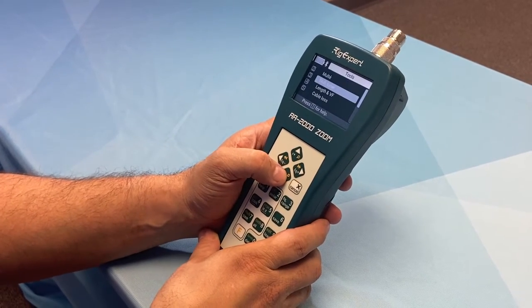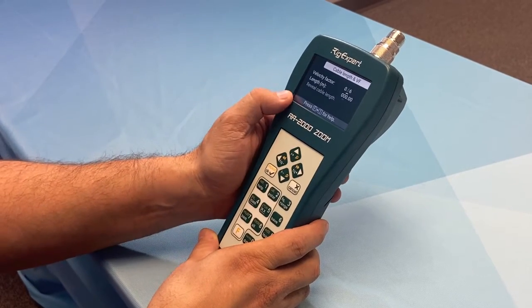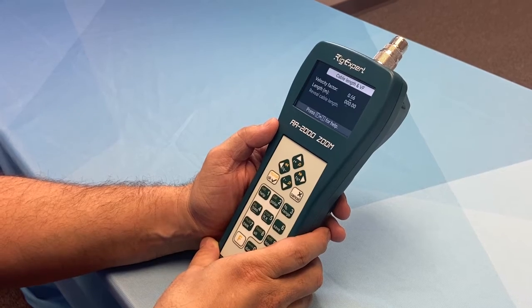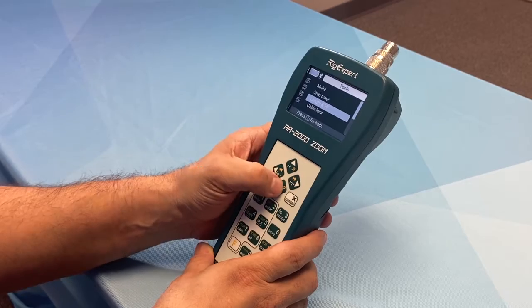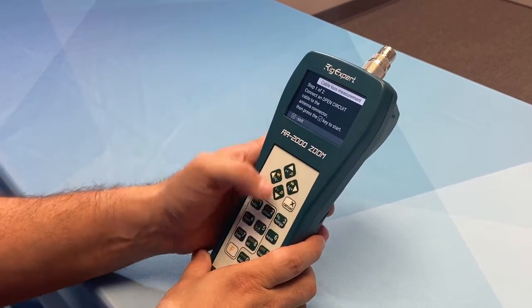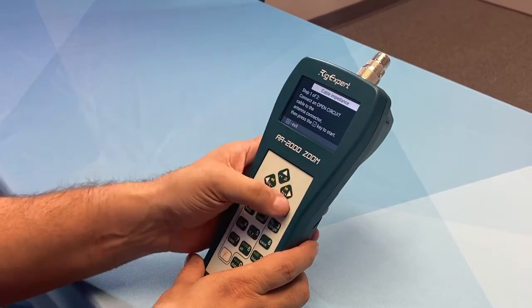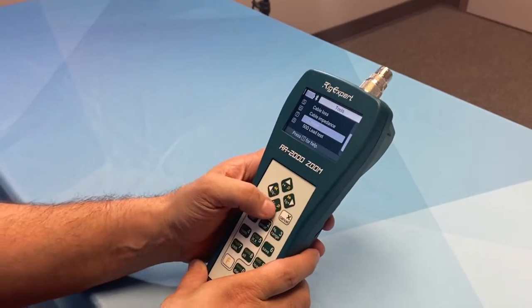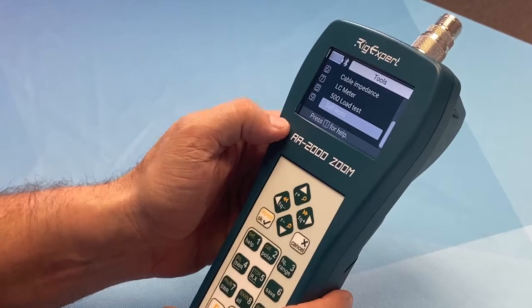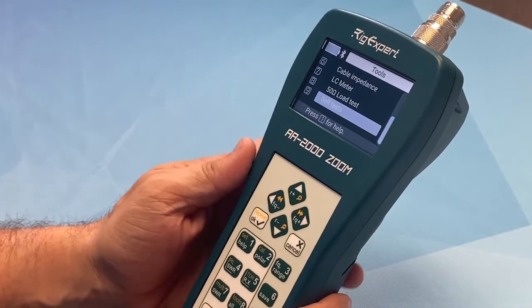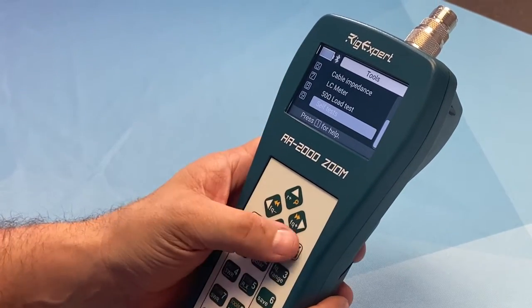Some tools. You can use a stub tuner, length. A lot of people ask, well, what is this for? You can actually test the length of your coax. If you're not sure how long your coax is, here you can do this. You can test for cable loss. You will need some open circuit cables. You can check your cable's impedance. You will need some calibration tools. It does have a 50 ohm load test, and it does have self-test, so if you're just not sure if this is calibrated and you can run your own self-test, you will need some calibration items to make that happen, though.